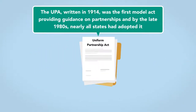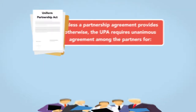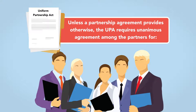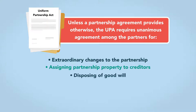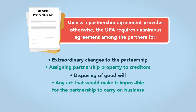The UPA, written in 1914, was the first model act providing guidance on partnerships, and by the late 1980s, nearly all states had adopted it. Unless a partnership agreement provides otherwise, the UPA requires unanimous agreement among the partners for extraordinary changes to the partnership, assigning partnership property to creditors, disposing of goodwill, any act that would make it impossible for the partnership to carry on business, and adding a new partner.